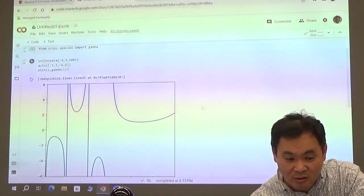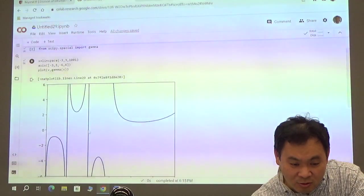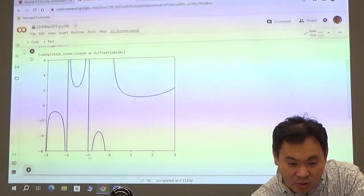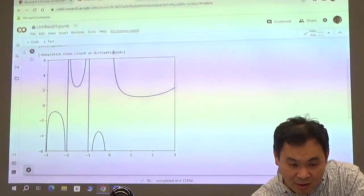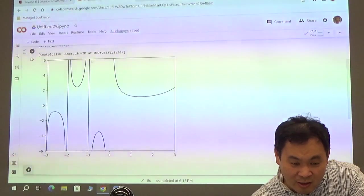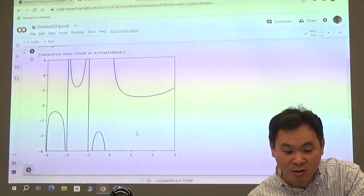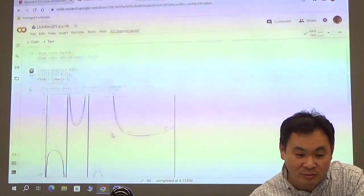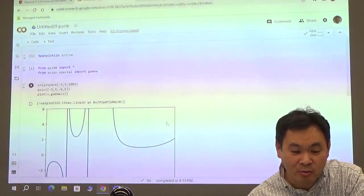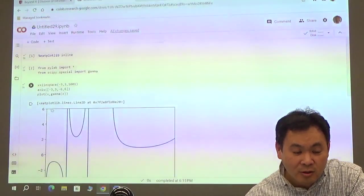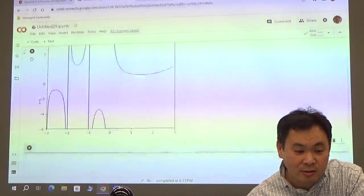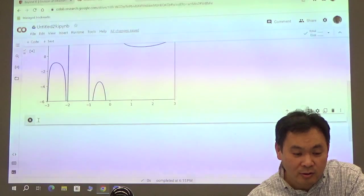And then if I draw more on the right side, it's going to go up like that. It goes up there. But at every integer, at negative 1, at 0, at 0 it has a vertical asymptote, at negative 1 it has a vertical asymptote, at negative 2 it has a vertical asymptote, and so on. So that's what happens with this gamma function.